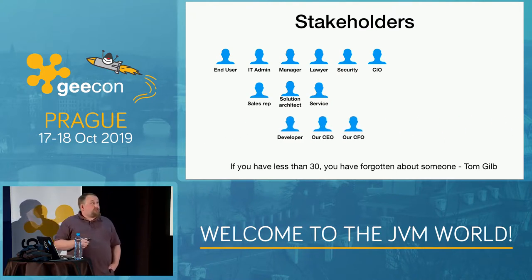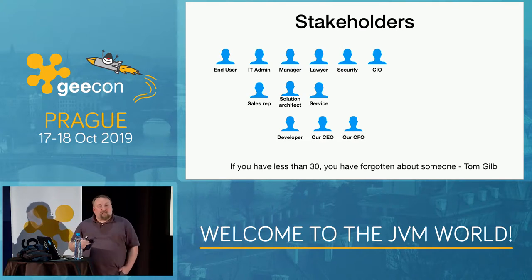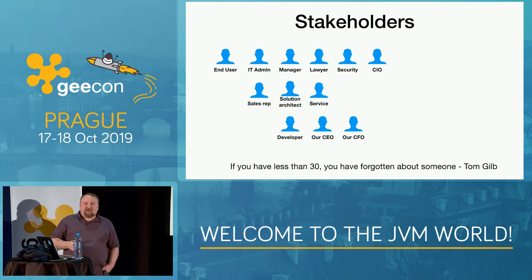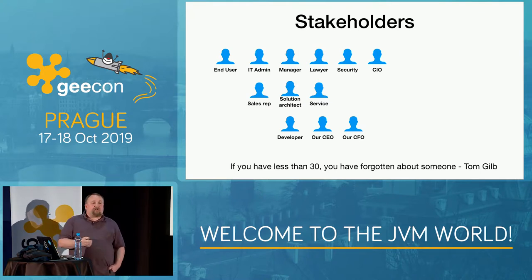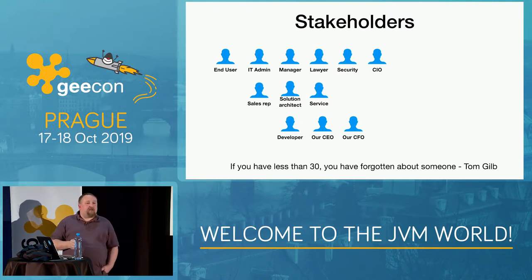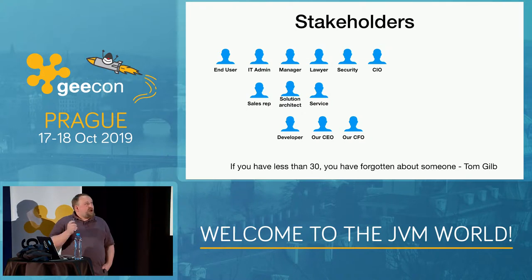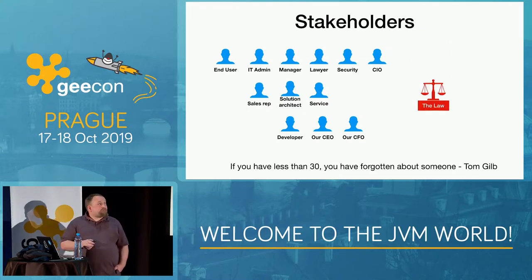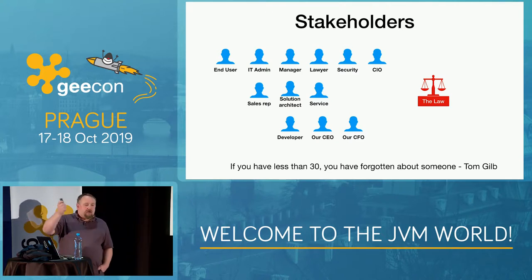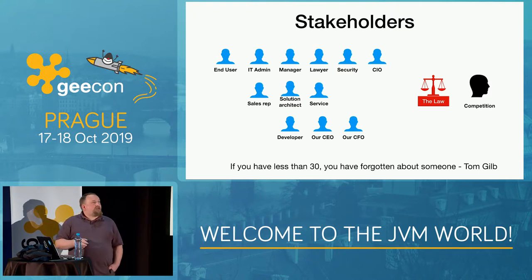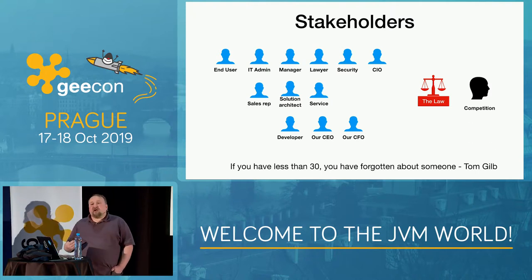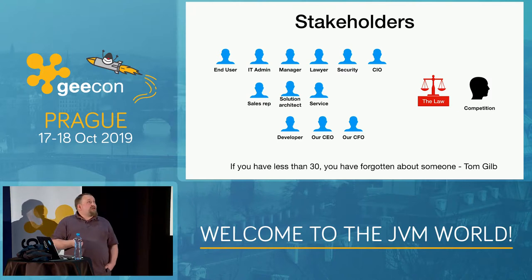What usually gets forgotten are stakeholders from our own company. If you forget about your CEO, he will probably come and remind you. But few people treat developers, QA engineers, or customer support as important stakeholders — yet if you don't have those people, you can't really deliver anything. What also gets totally forgotten is the law — meaning GDPR and such — and the competition, because a stakeholder is anybody who can spoil or improve what you're doing.